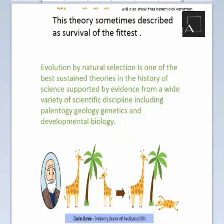Evolution by natural selection is one of the best-sustained theories in the history of science, supported by evidence from a wide variety of scientific disciplines including paleontology, geology, genetics, and developmental biology. These are all inter-disciplinary fields that have together allowed us to discover and understand the evolution process.